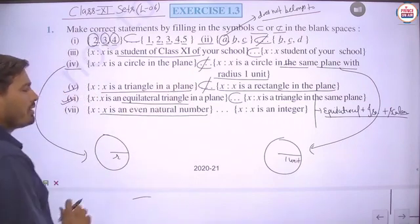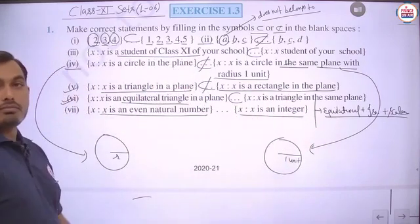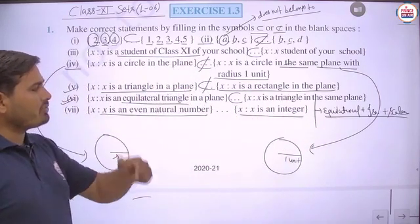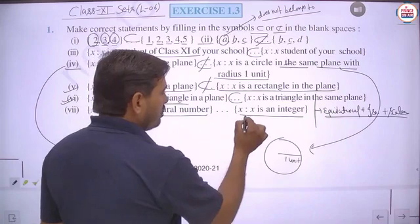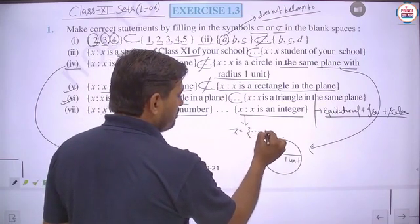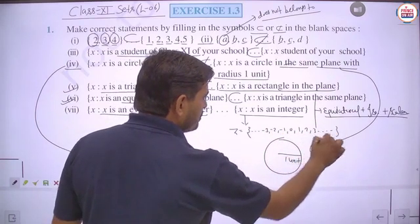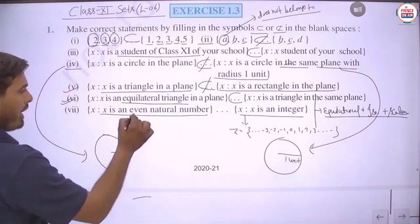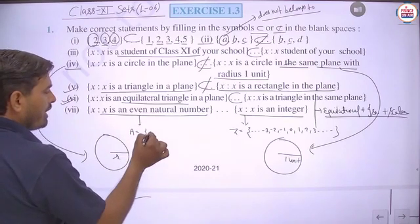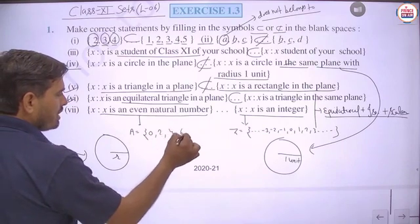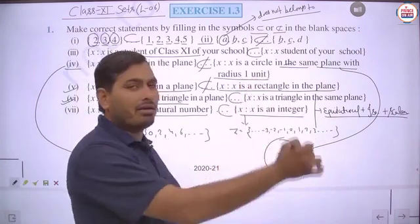Seventh part: X is an even natural number, and the second set is all integers. The set of integers includes …, -3, -2, -1, 0, 1, 2, 3, … Even natural numbers like 2, 4, 6, … all belong to the set of integers. So we use the subset symbol here.